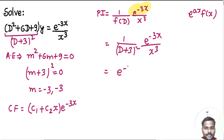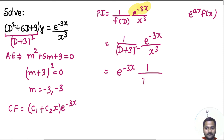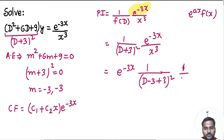Now take e to the power minus 3x outside, which will result in a change of D. You just have to replace D by D minus 3. So remove this D and in place of D write D minus 3. The plus 3 is already there, and you get 1 over D squared.